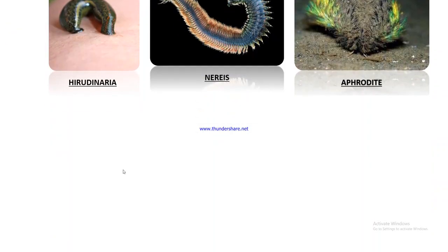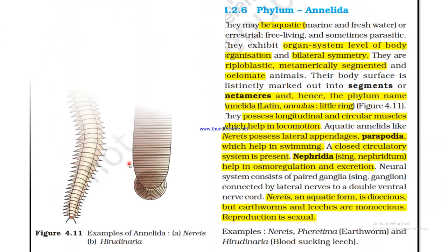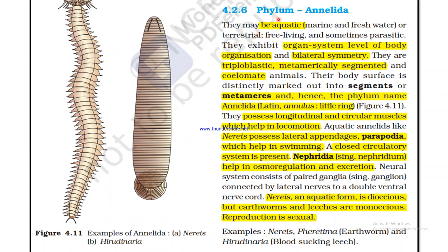According to NCERT, Phylum Annelida members may be aquatic — marine and freshwater — or terrestrial, free-living, and sometimes parasitic. They exhibit organ system level of body organization and bilateral symmetry. They are triploblastic, metamerically segmented, and coelomate. Their body surface is distinctly marked into segments or metameres — hence the phylum is named Annelida from Latin 'annulus' meaning little rings. They possess longitudinal as well as circular muscles which help in locomotion.